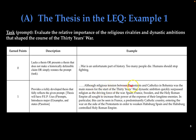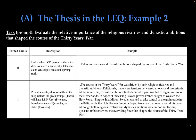And then the examples: 'Spain, France, Sweden, and the Holy Roman Empire all sought to increase their power at the expense of their longtime enemies. In particular, this can be seen in France, a predominantly Catholic country, entering the war on the side of the Protestants in order to weaken Habsburg Spain and the Habsburg-controlled Holy Roman Empire.' That is what we're looking for.